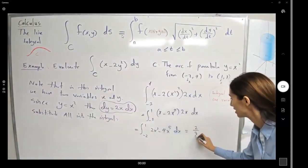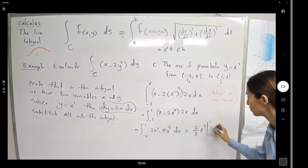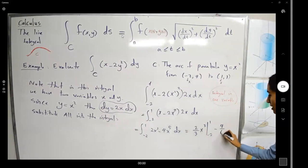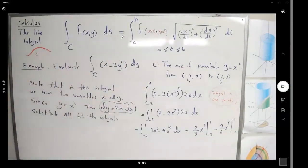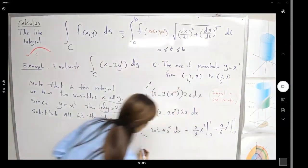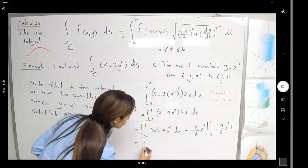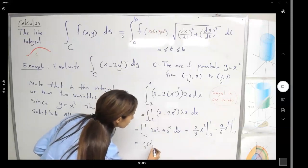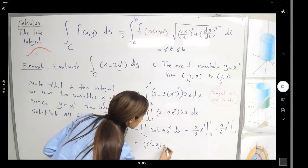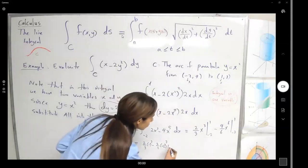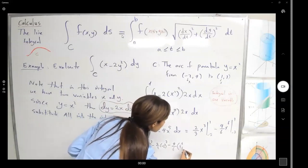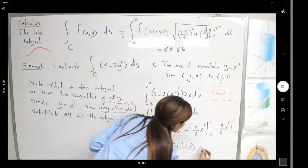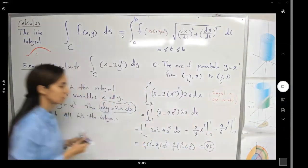Integrating gives (2/3)x³ − (4/6)x⁶, evaluated from −2 to 1. Substituting: (2/3)(1)³ − (2/3)(−2)³ − (4/6)(1)⁶ + (4/6)(−2)⁶, which equals 48. Thank you.